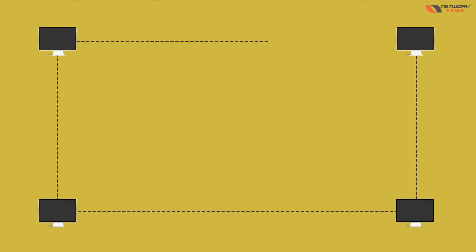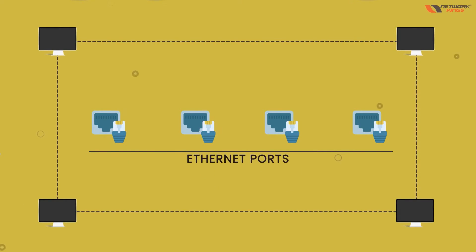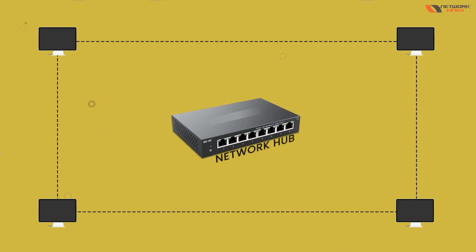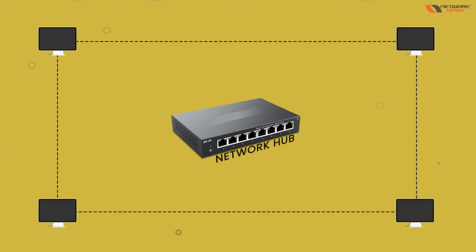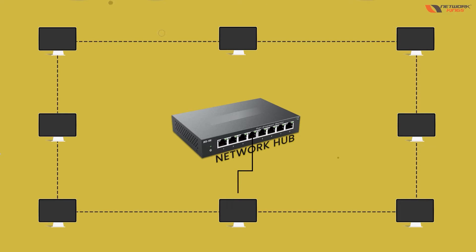After that, if we want to connect four computers together, we buy a device called a switch — or earlier, a hub. Hub has a problem: if you send data to one computer, the data goes to all computers. In a hub, all computers are connected and you can see the cables connected like this.